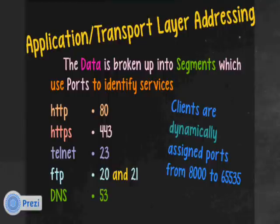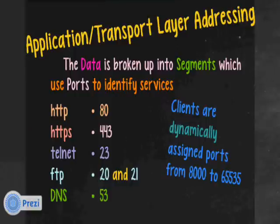Clients are dynamically assigned ports from 8000 to 65535. So a web browser would arbitrarily be assigned a port — say port 10,000 — and then talk to a web server on port 80. Opening a second browser gives it another port, say 1001, and it can talk to the same web server on port 80. The web server knows it has two clients from one computer and can send the correct web page to each one. This lets us keep track of who's talking to who and have multiple browsers running.